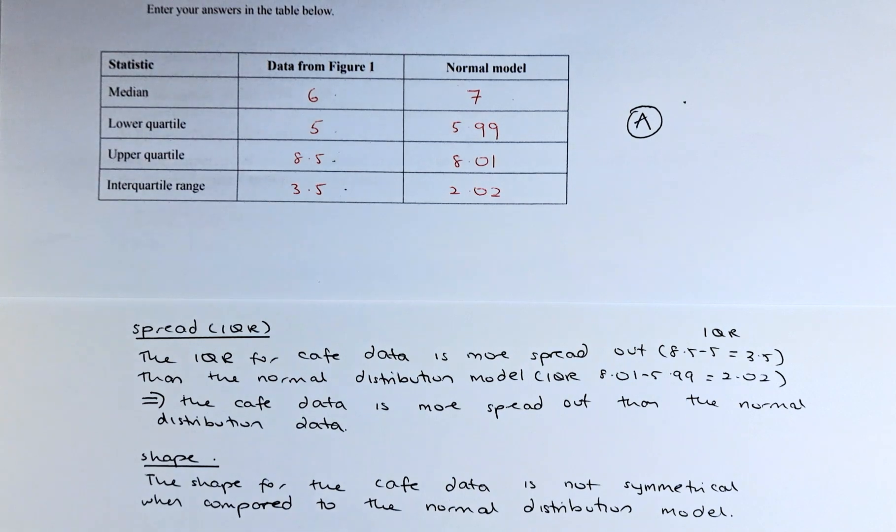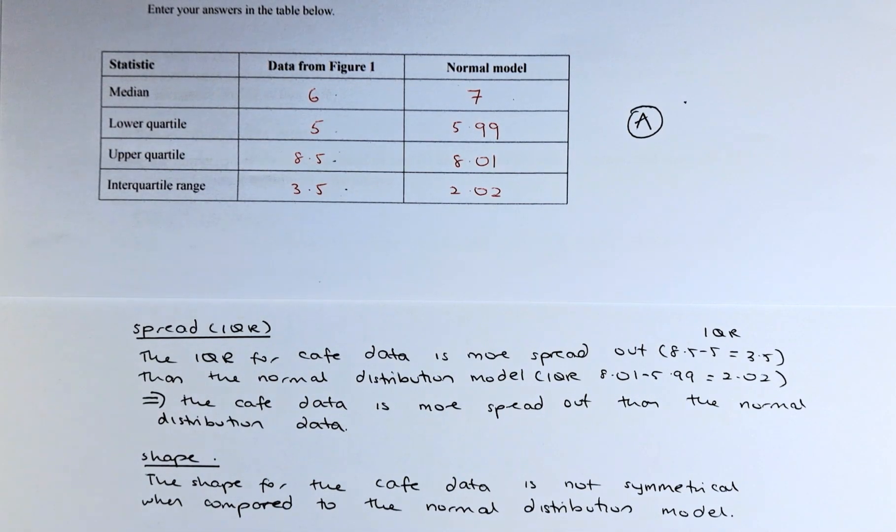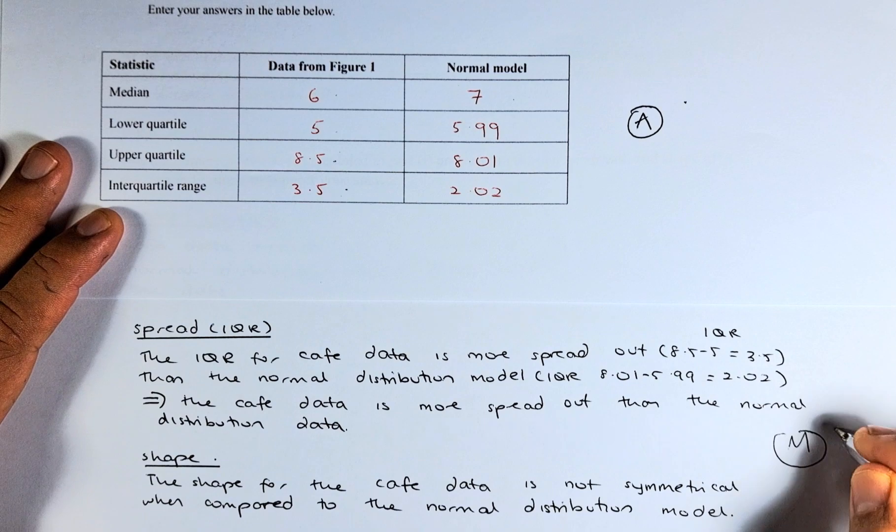So the data from the cafe is not actually a normal distribution. So technically, the three points we talk about—the centre, the spread and the interquartile range, and the shape—all these show that they do not follow the normal distribution model. So that's how you argue, and you can answer that. You get a merit for this paper.